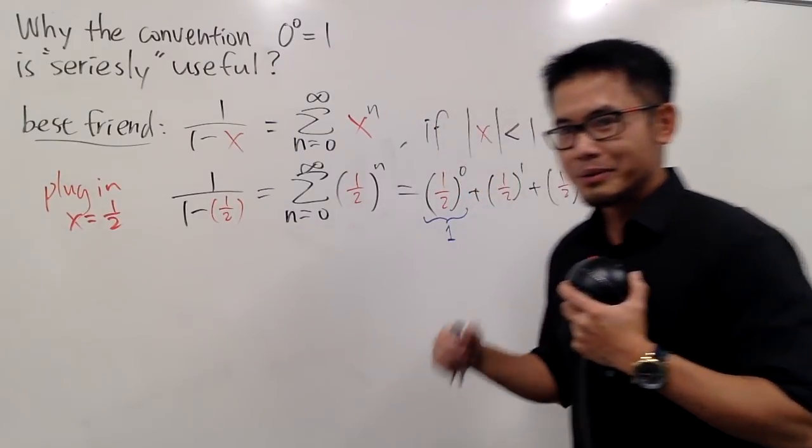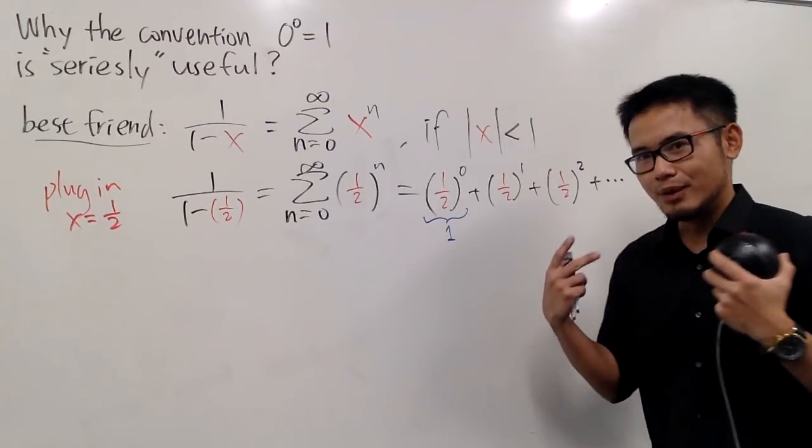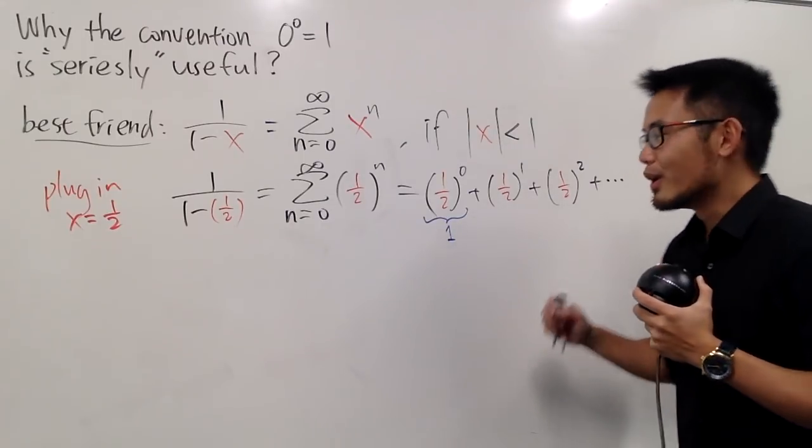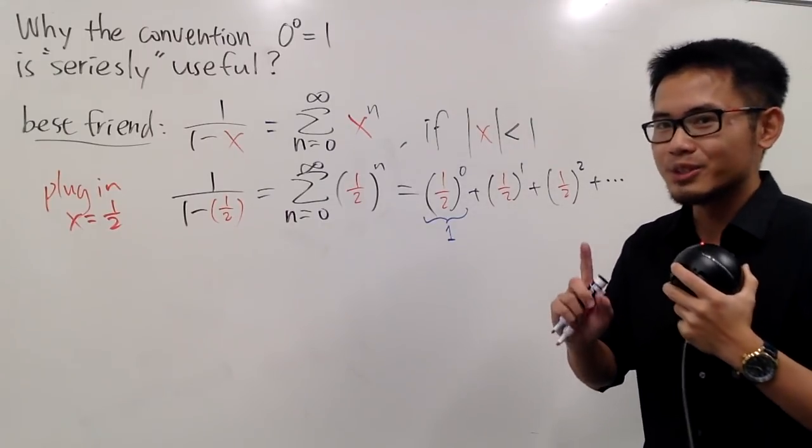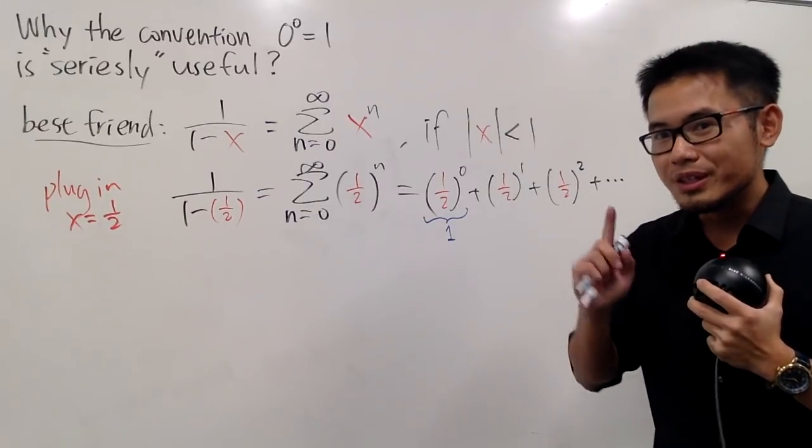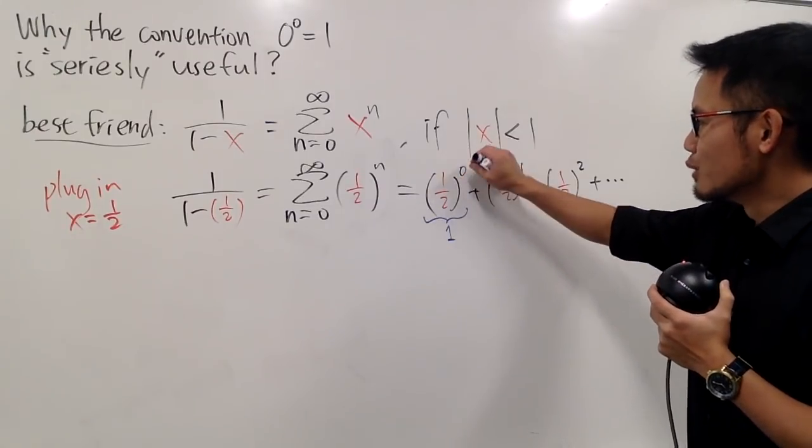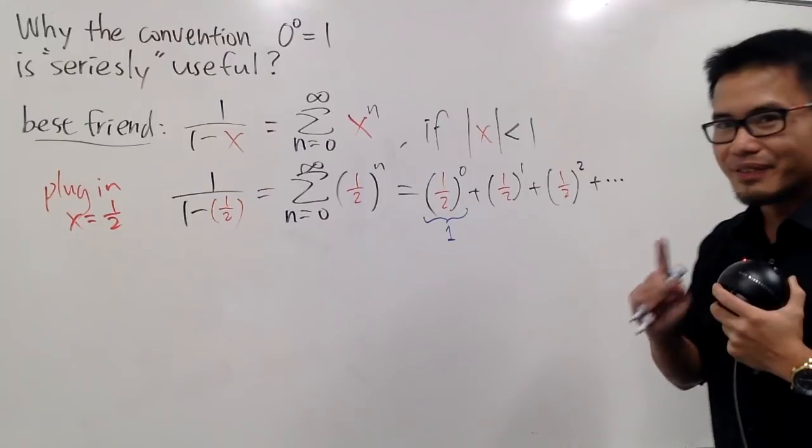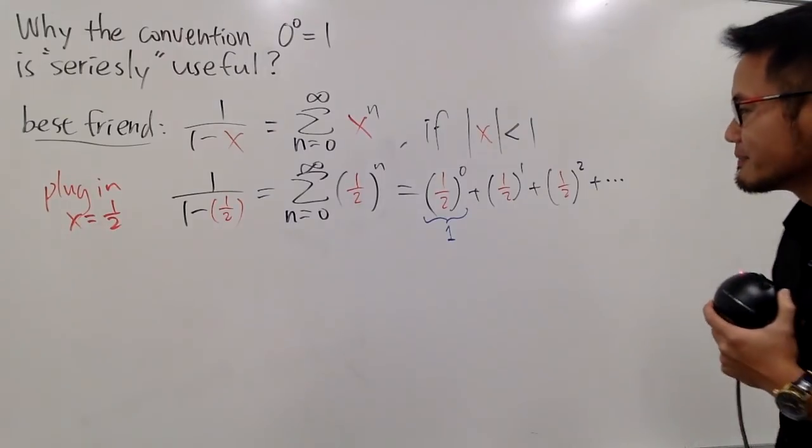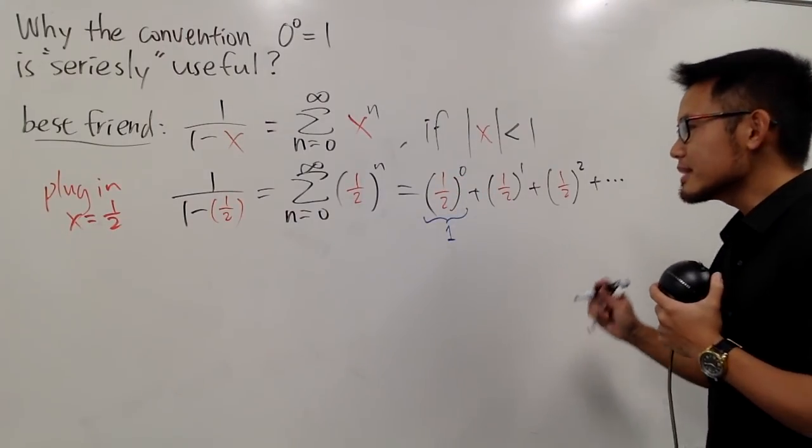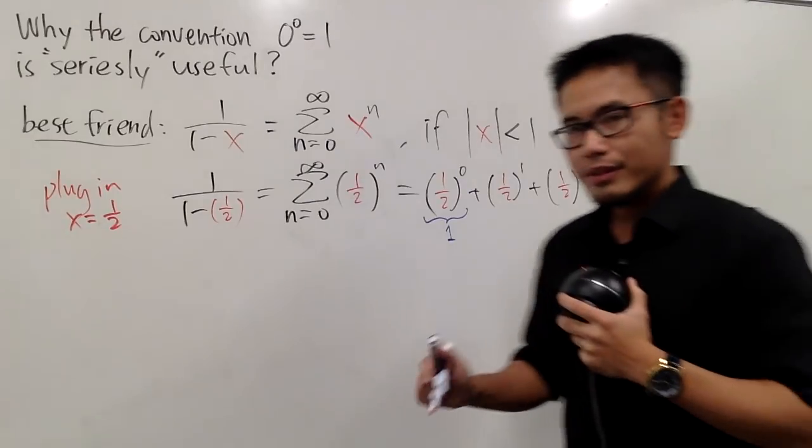And if you guys would like to know, you can comment down below, and if you have enough comments, I can talk about why we take a convention, well, actually, no, a definition. Why do we define a non-zero number to a zero power to be 1? It's a definition. It's not proof whatsoever. But anyway, this is equal to 1. Okay, so far so good.